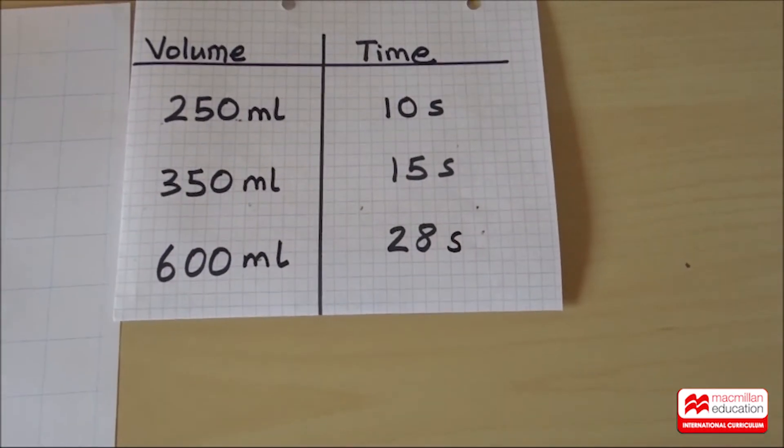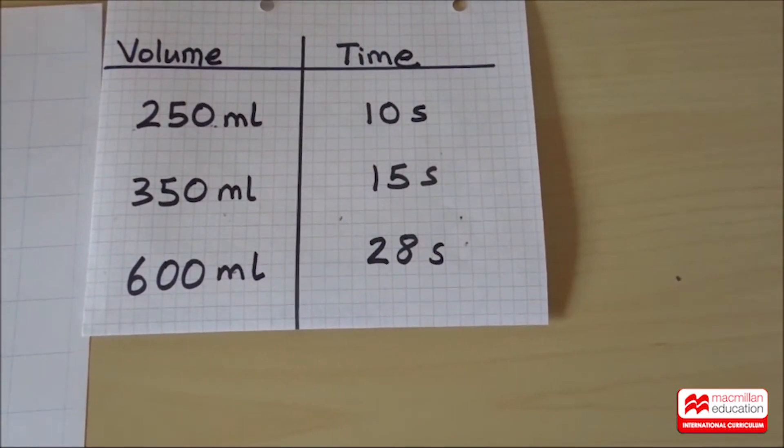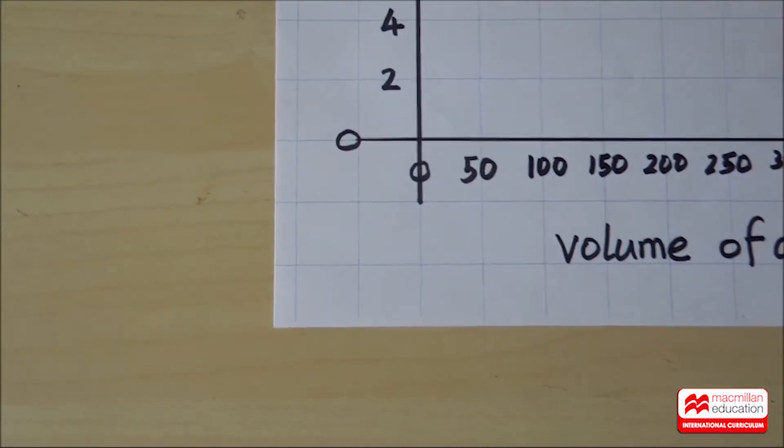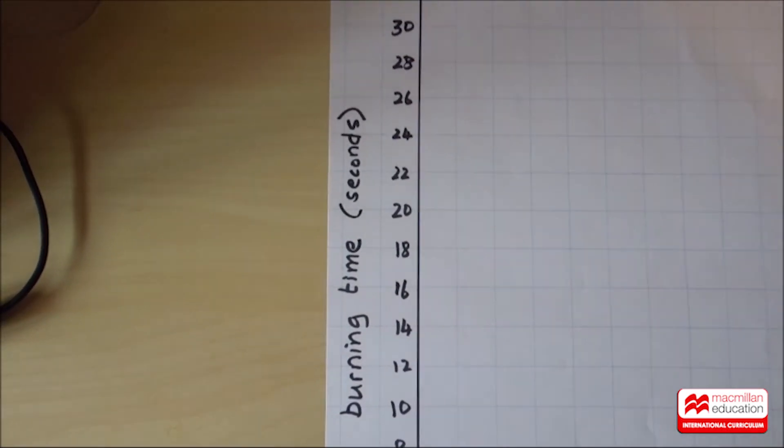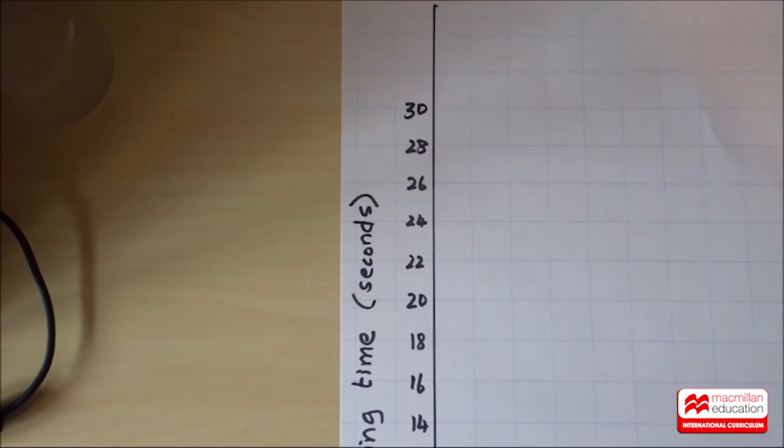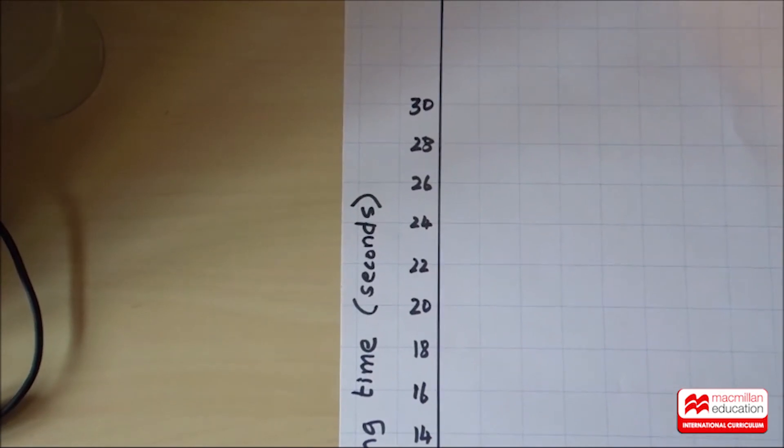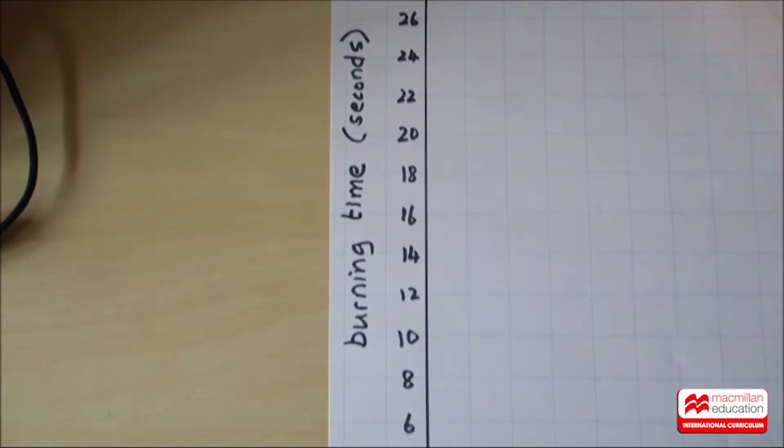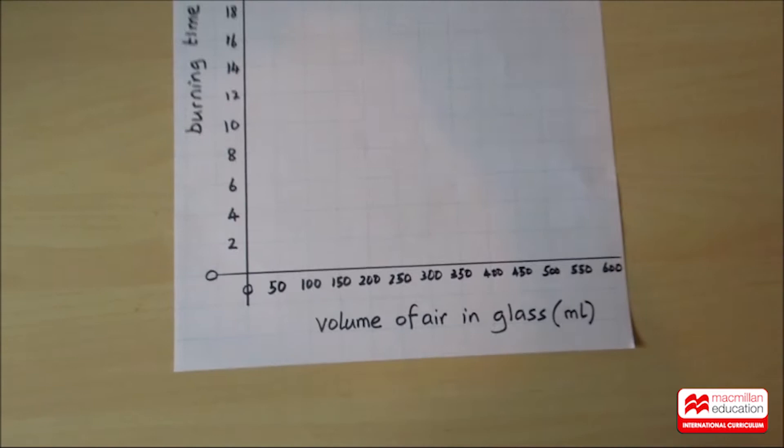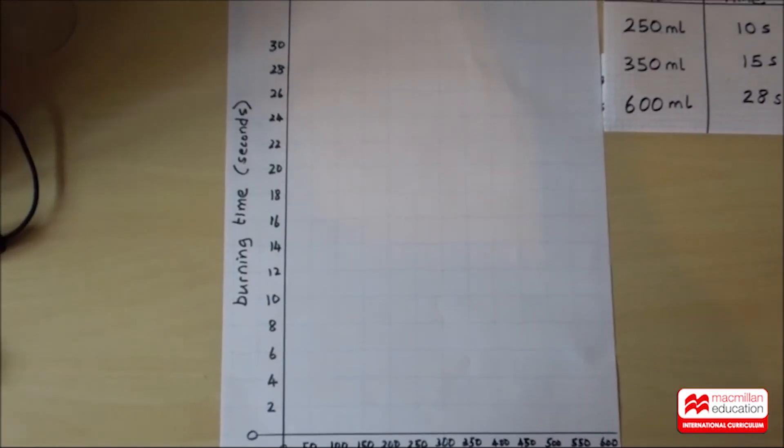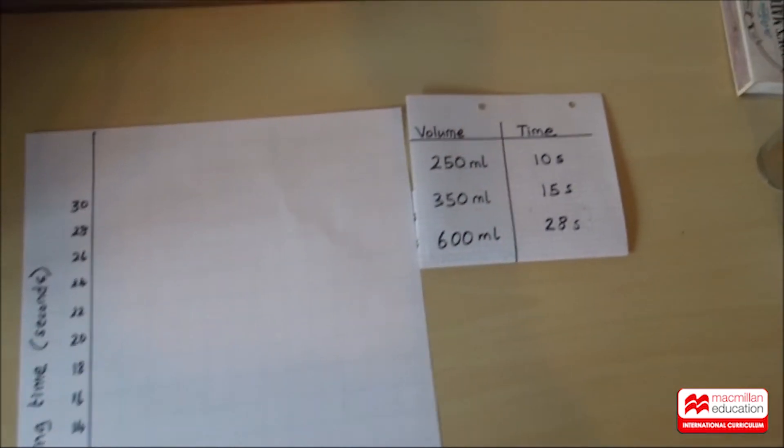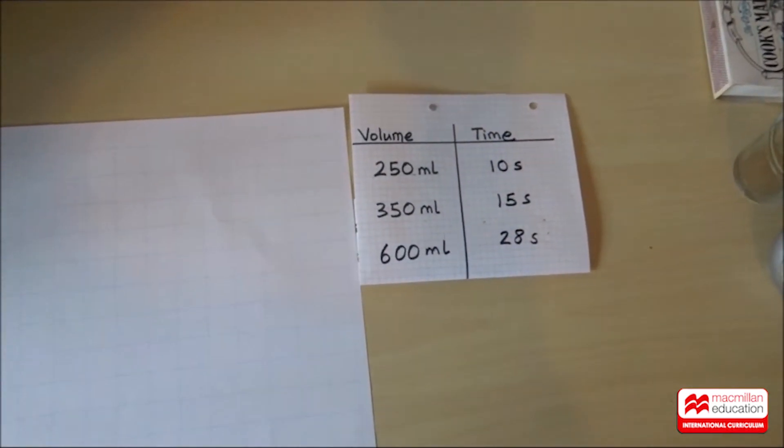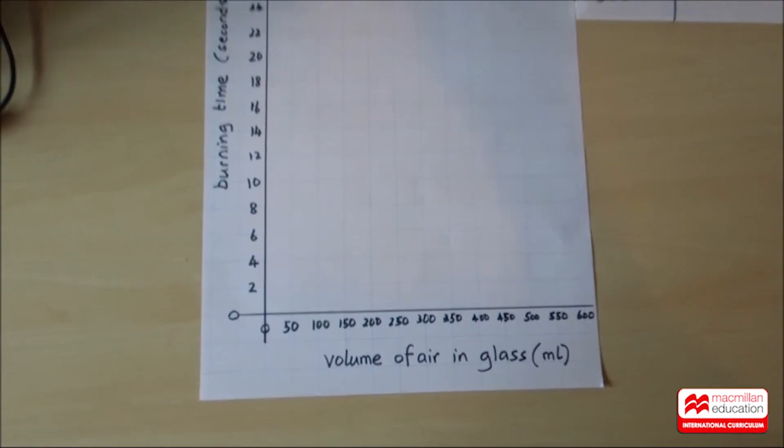The times go right up to 28 seconds. And so on the vertical line I started at zero. And the burning time in seconds goes up to 30, which is bigger than 28. So I can fit everything on this space in the graph paper. Let's see how we can turn the results into the shape of a graph.